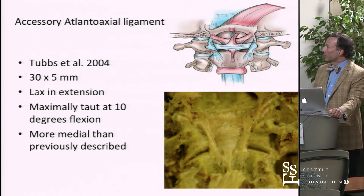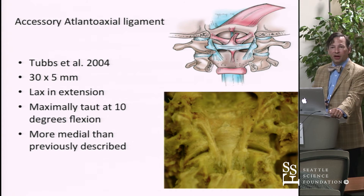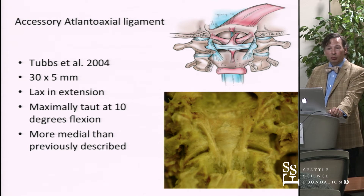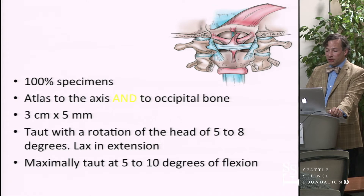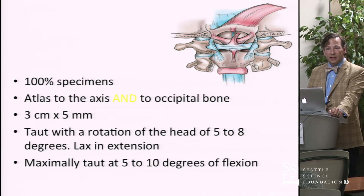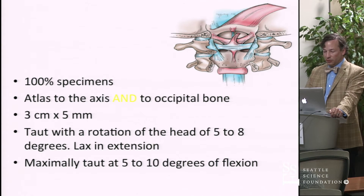Interestingly, it's been shown incorrectly for over 100 years. The ligament, as you see from the study, was about 30 by 5 millimeters, so not a huge ligament. It lacks extension. It becomes maximally taut in about 10 degrees of flexion, and its more medial association with the odontoid specifically bolsters that transverse ligament just lateral to the odontoid. We found it in 100% of specimens. As I mentioned, it extends up to the occiput — it doesn't end on the axis as most people have discussed.